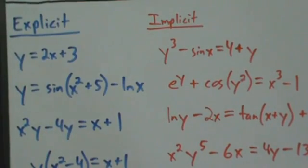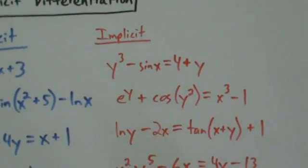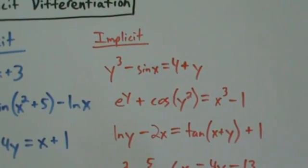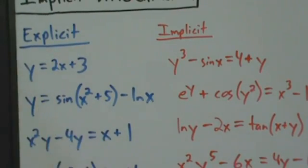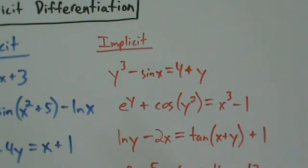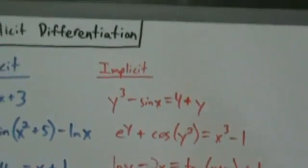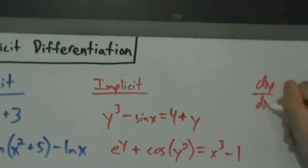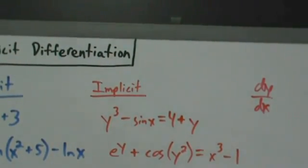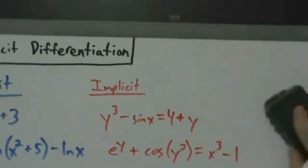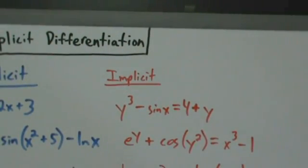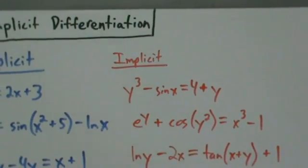What have we been doing with explicit functions? We've been finding derivatives. We can still do that with implicit functions, but it's going to be a little more complicated because we don't have the luxury of saying y equals stuff with x. But because y is still a function of x, we can find the derivative — things like dy/dx or y prime, which is the same thing. Slopes of the curve, slope of the tangent line, instantaneous rate of change — it's all the derivative. And because y is a function of x, we can do that.